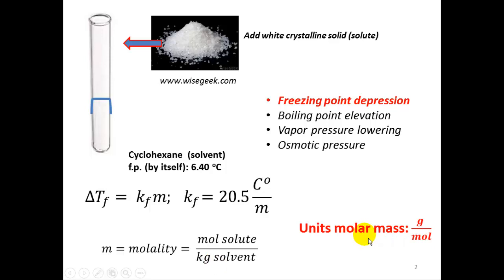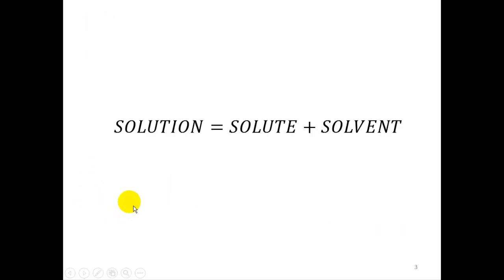Another important thing you will need for this lab is the units of molar mass: grams over moles. You will weigh out two mixtures. The first mixture has 0.06 grams of the unknown, and the second adds an additional 0.03 grams for a total of 0.09 grams. We will get the molecular weight of the unknown using this equation. The solution equals solute plus solvent — you will not get any colligative properties unless you add a solute to the solvent.